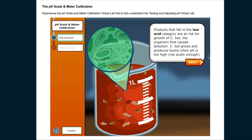C. bot grows and produces toxins when pH is too high, not acidic enough.